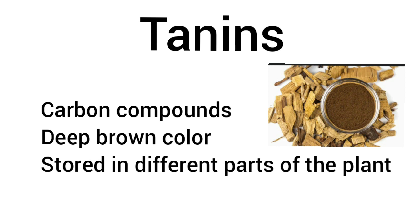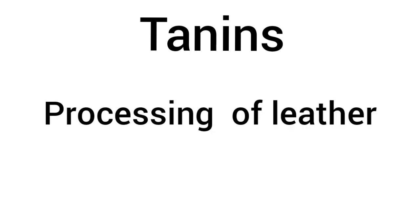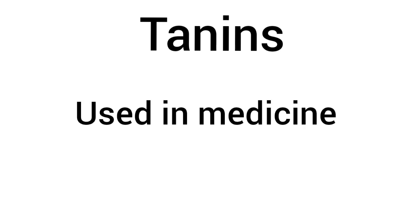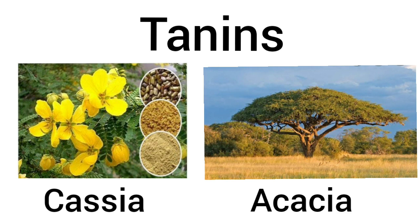Tannins are carbon compounds, usually deep brown in color, and are stored in different parts of the plant. These tannins are secondary metabolites coming out from various parts of the plant and are used in tanning of leather — that is, processing of leather for the leather industry. Tannins are also used in medicines because of their astringent, or cleansing, properties. Examples of plants which give out tannins are Cassia and Acacia.